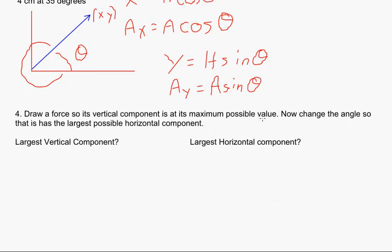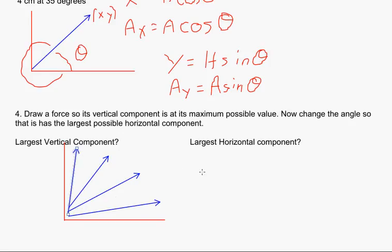Let's go down and take a look at the very last one. It says draw a force so its vertical component is its maximum possible value. Now change the angle so that it has the largest possible horizontal value. So let's take a look at some forces. I'm going to draw my x and y axis first. There's my x and y axis. Now, the thing you should realize is that when you have a vector like this one, or this one, or this one. What you'll see is you've got a series of vectors here. What you would want to do is they should all be the same length, like make it easy, like 10.